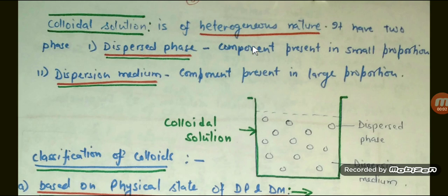Hello students, the next topic is colloidal solution. What are colloidal solutions and their classification? Colloidal solutions are solutions in which particle size of the solute ranges from one nanometer to one thousand nanometers and they have heterogeneous nature. The concentration of the solute is not uniform throughout the solution.